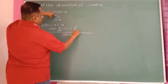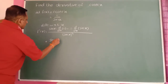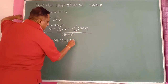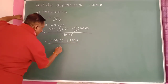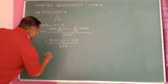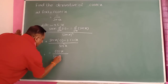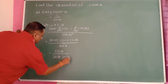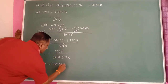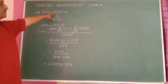The differentiation of 1 is 0, minus 1 into differentiation of sin(x), which is cos(x), divided by sin²(x). So 0 minus cos(x) remains, giving minus cos(x) divided by sin²(x). Splitting sin²(x) as sin(x) times sin(x), this equals minus (1/sin(x)) times (cos(x)/sin(x)), which is minus cosec(x) cot(x).